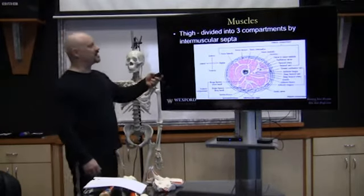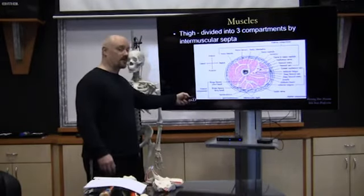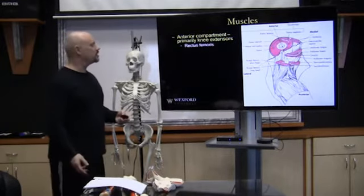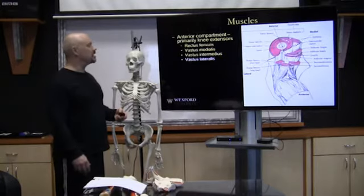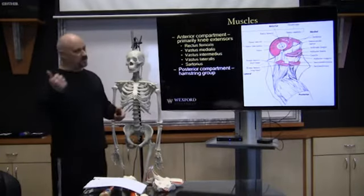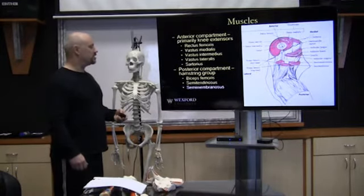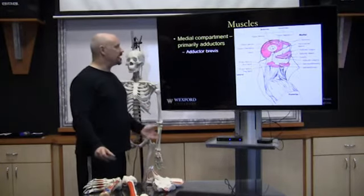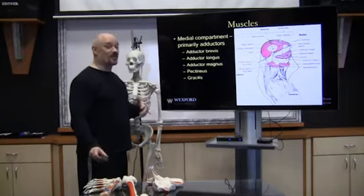The thigh is divided into three compartments by the intermuscular septa. In the anterior compartment are the primary knee extensors: the rectus femoris, vastus medialis, vastus intermedius, and vastus lateralis, plus the sartorius. In the posterior compartment is the hamstring group: biceps femoris, semitendinosus, and semimembranosus. In the medial compartment are primarily the adductors: adductor brevis, adductor longus, adductor magnus, pectineus, and gracilis.